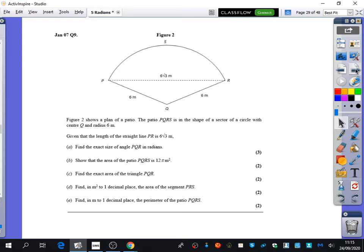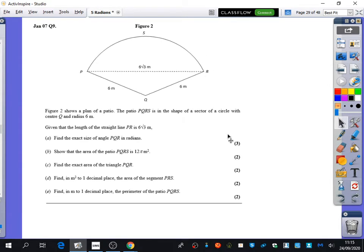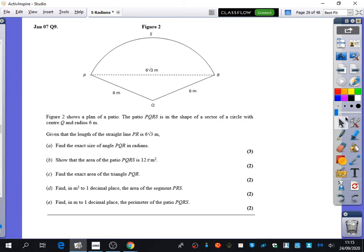Find the exact size of the angle PQR in radians. I'm interested to hear how people might have approached this because I think there's a good way and a less good way about how to do part A of the question. What's the good way to do part A of the question to find this angle PQR here?